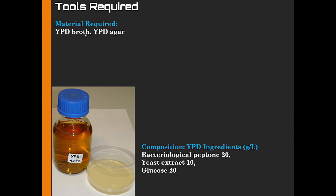The second thing is the media components. There are two things mentioned here: one is the broth and one is the agar. YPD broth is a liquid medium and YPD agar is a solid medium. The composition of this YPD is shown here. It consists of bacteriological peptone, 20 grams for one liter of solution, yeast extract and glucose. So it comes to something around 2%, 1% and 2% if you are making 100 ml of medium.